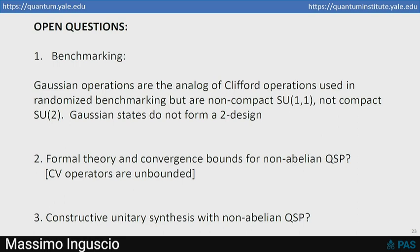So I'll end with open questions. Benchmarking—we know about randomized benchmarking for qubit circuits using random Cliffords. Gaussian operations are the analog of Cliffords, but the group is non-compact, so what should we do? We don't have a formal theory yet and convergence bounds for this non-abelian quantum signal processing idea. That needs to be formalized, and we have now some intuition about how to build these circuits without doing numerical optimization or some idea now of what the numerical optimization is doing, but we don't have a constructive unitary synthesis scheme that we can do other than for a number of specific examples. So we'd like to expand that, and I'll stop there.